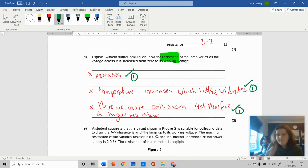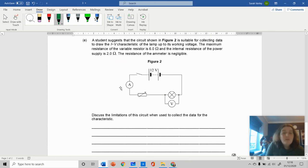A student suggests that this circuit is suitable for collecting the data. The lamp's working voltage is 12 volts, the maximum resistance on the variable resistor is 6 ohms, and the internal resistance is 2 ohms. If I see the word practical circuit or internal resistance, I stick an internal resistor into my device here.